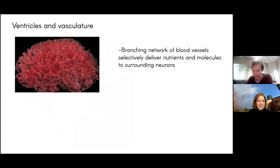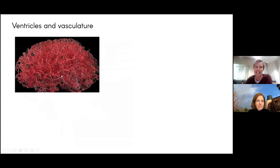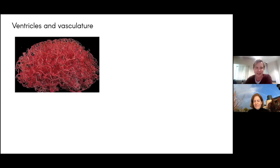Vasculature refers to blood vessels — capillaries, veins, arteries — within the brain network. Even though most images show just a few large blood vessels, they're actually everywhere in the brain. Interestingly, if something penetrates the brain, it won't necessarily kill you even if it damages neural tissue — what might actually kill you is when larger blood vessels are disrupted and blood flows out into your brain. It's a branching network that carries nutrients and molecules to neurons and nearby tissue.